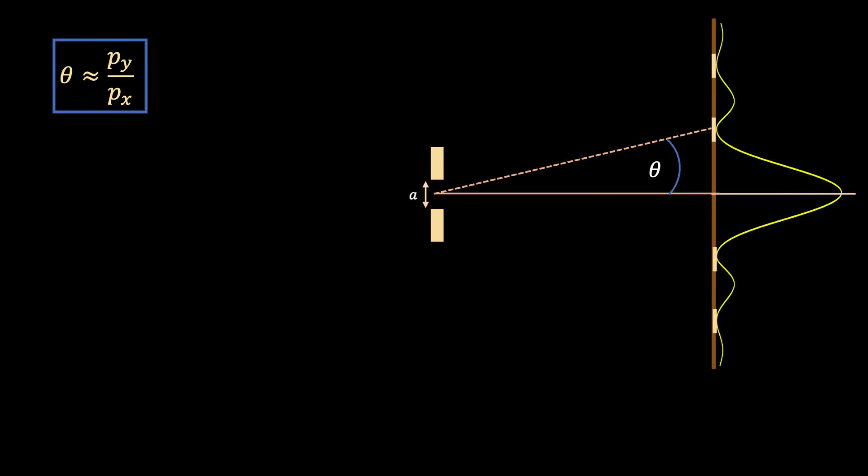Now, the next step is to realise that we can write down an equivalent expression for the angle theta by referring to the fact that for a single slit diffraction pattern, basic geometric optics tells us that provided the wavelength of the laser light is much smaller than the width of the gap, a, we can write the angle to the edge of the central fringe in terms of the wavelength lambda and the slit width a, as theta equals lambda divided by a. And so we now have two expressions for the angle theta, and if we combine them, we find the following relation. And if we then rearrange this, we find that we can write p subscript y is roughly equal to p subscript x multiplied by lambda divided by a.